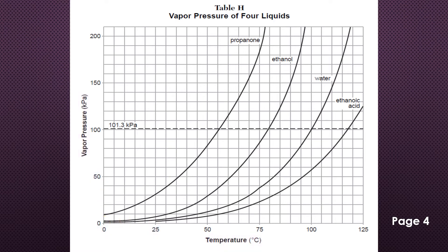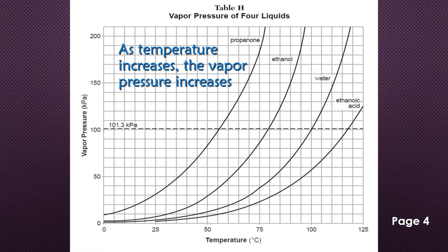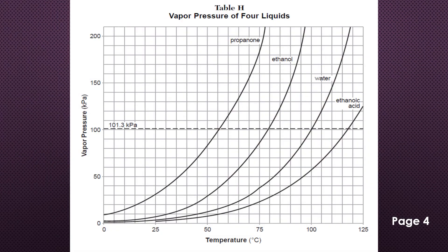The table also shows that as we increase temperature, vapor pressure increases. For example, focusing on water: when the temperature is zero, the vapor pressure is also zero. As we follow the curved line for water and increase temperature, vapor pressure increases — so at around 119–120 degrees Celsius, the vapor pressure is around 210 kilopascals.